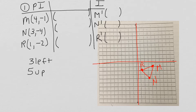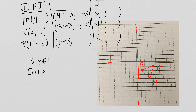Now we're going to do 3 to the left and 5 up. So we're going to fill in our 4, our 3, our 1. We're going to the left, so it's going to be plus negative 3, plus negative 3, plus negative 3. We're going to be going 5 up, so it's negative 1 plus 5, negative 4 plus 5, and negative 2 plus 5. So our new ordered pairs are going to be 1, 4; 0, 1; and negative 2, 3.